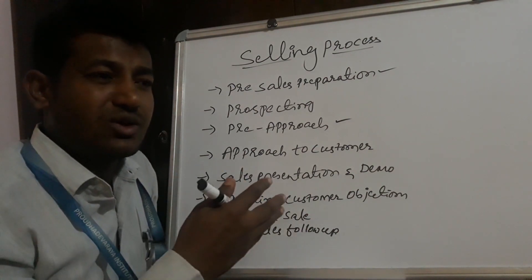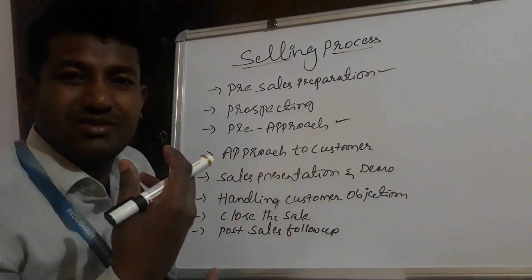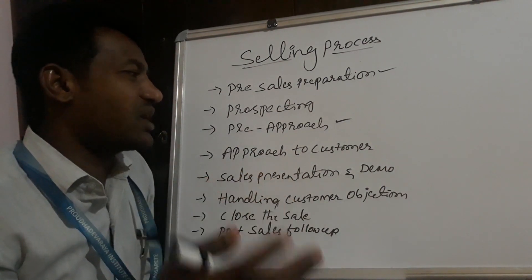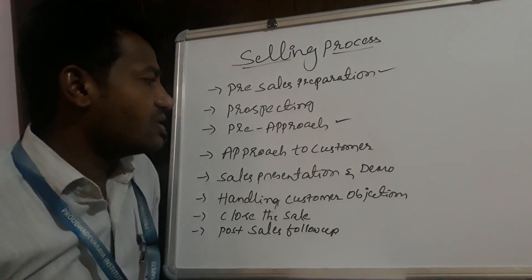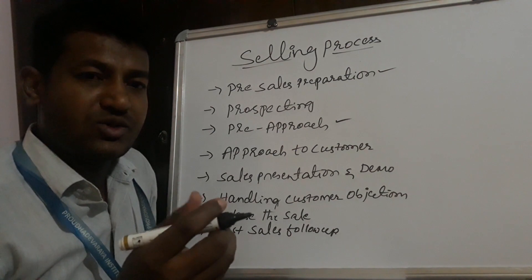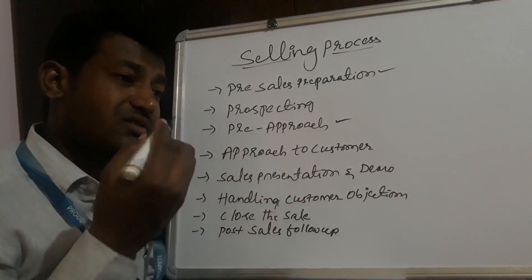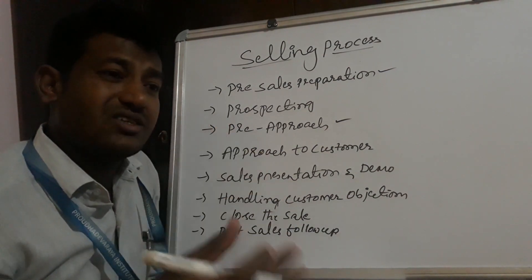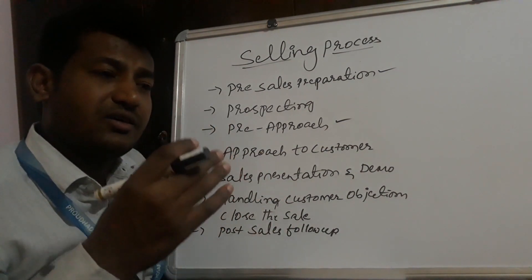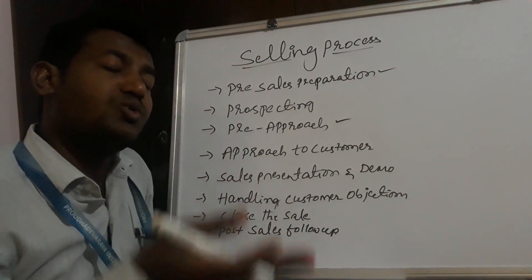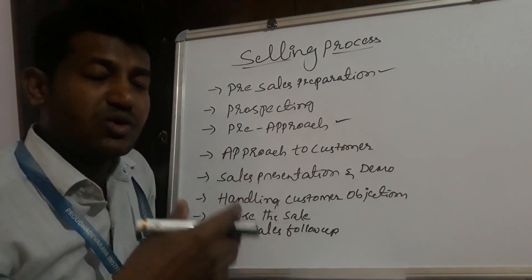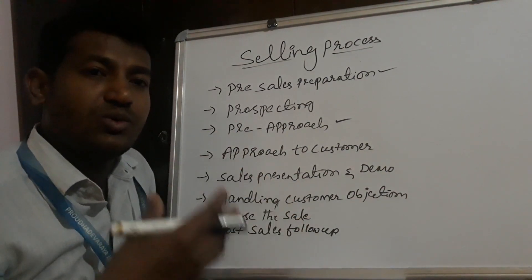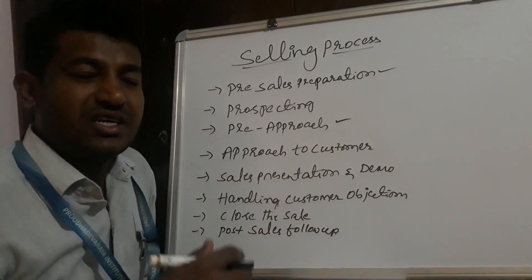In the pre-approach process, you need to gain a lot of information about the company and their branches — the employees, decision makers, and the chronological order of decision making, from whom to whom it will go, and who is going to release the purchase orders. Collecting all this correct information will really help you make more sales to prospective customers. That is called pre-approach.